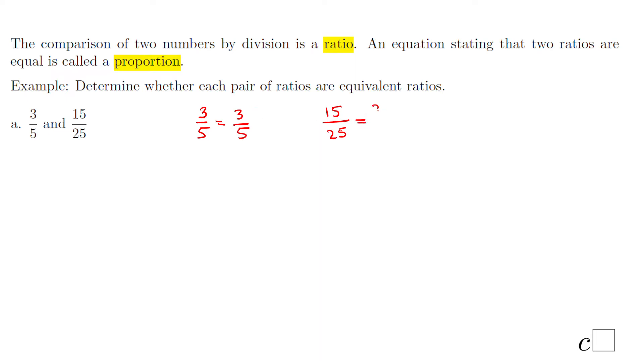However, 15 can be broken as 3 times 5 and 25 as 5 times 5. They have a common factor of 5 which we can simplify and we end up with 3 over 5. These two are the same, so we say these two ratios are equivalent ratios.